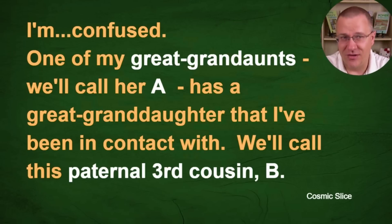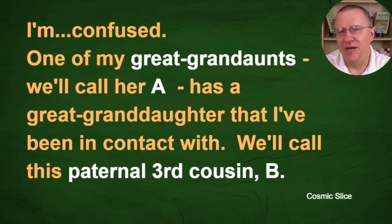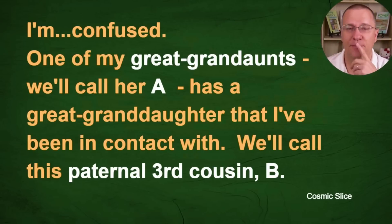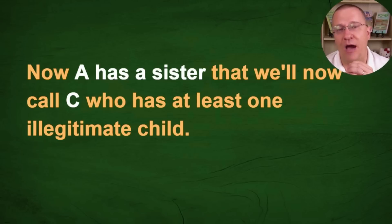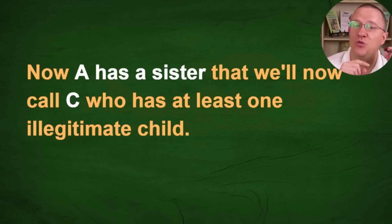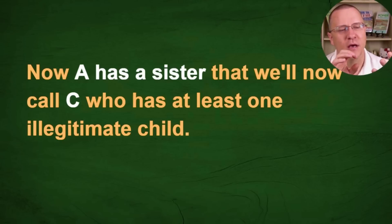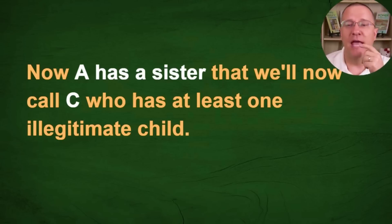One of my great grand aunts — we'll call her A — has a great granddaughter that I've been in contact with. I love it when people have been in contact with their DNA matches. We'll call this paternal third cousin B. Now A has a sister that we'll call C, who has at least one illegitimate child. So we're dealing with an NPE here and a couple of different relationships, and I can see why this is starting to get confusing right away.